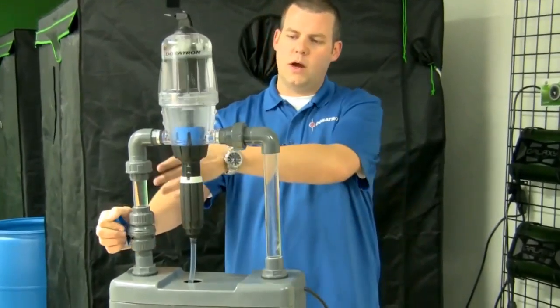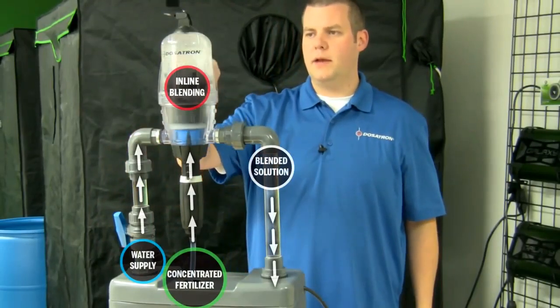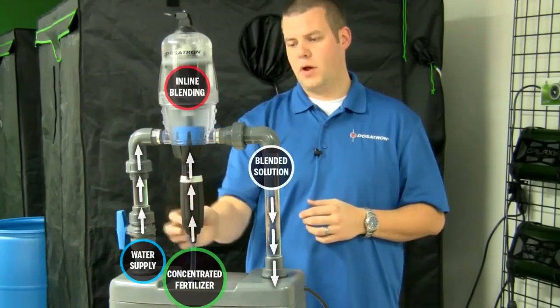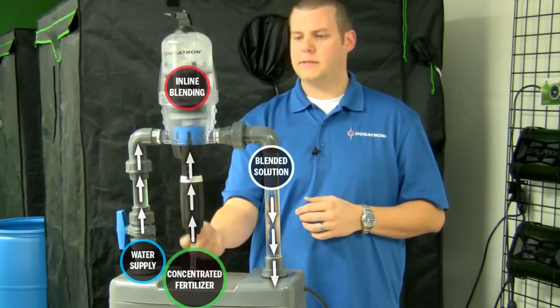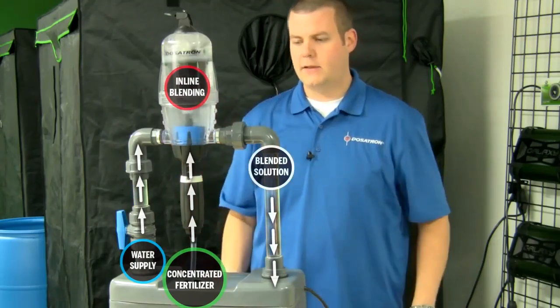Now you can see that the water is coming through the unit, and you can see that piston moving up and down, pulling up that product from the base, drawing that concentrate, blending it in line, and putting it out exactly how we want it.